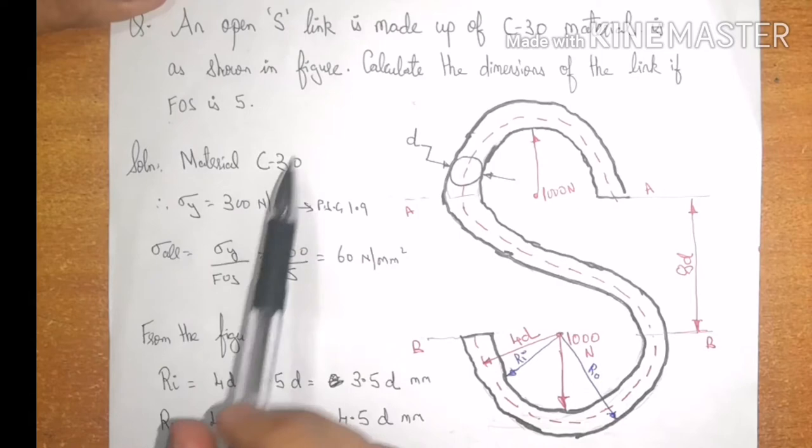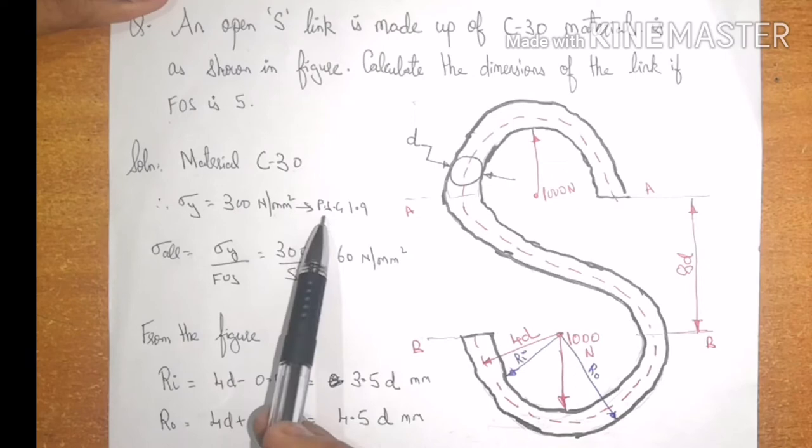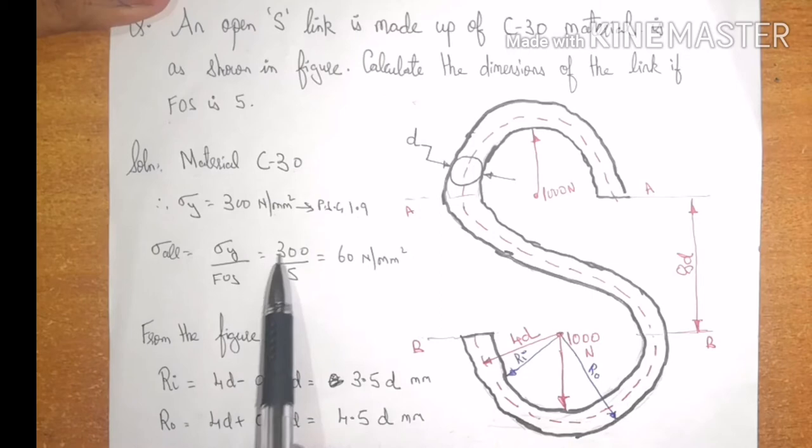As material is given C30, I will use sigma y as 300 newton per mm square from PSG 1.9. Sigma allowable will be 300 divided by a factor of safety, that is 60 newton per mm square.